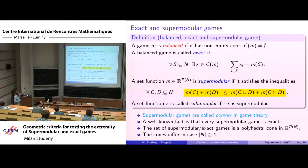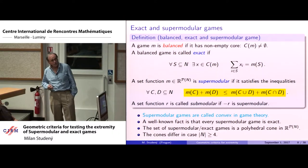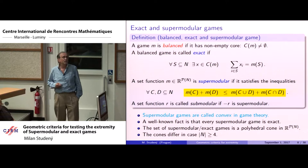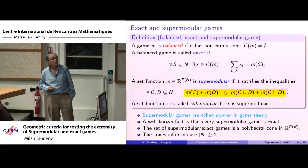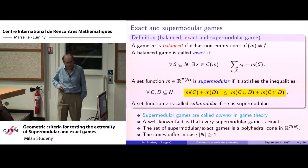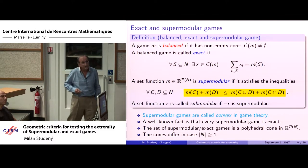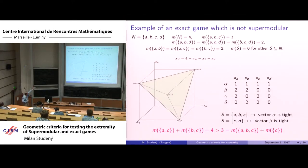A well-known fact is that every supermodular game is exact. Both sets are polyhedral cones — evident for the supermodular cone, less so for the exact cone, but true. These cones coincide for three players but differ for four players.